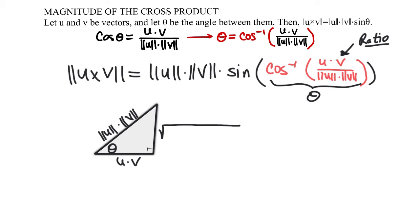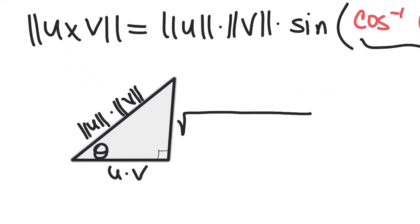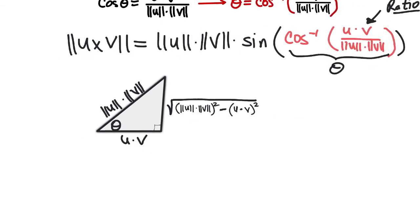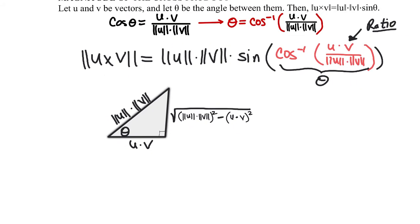It's going to be the square root of the product of ||u|| ||v|| magnitudes squared minus u dot v squared.